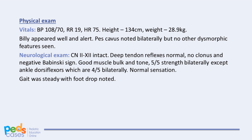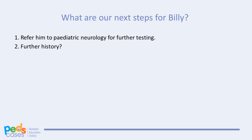On physical exam, Billy appears well with normal vital signs and growth parameters. Cranial nerves 2 to 12 are intact. His deep tendon reflexes are normal, and no clonus was elicited. He has good muscle bulk and tone. Strength is 5 out of 5 throughout, with the exception of his ankle dorsiflexors, which are graded 4 out of 5 bilaterally. Sensory exam is normal. Upon assessing his gait, bilateral foot drop is observed. Notably, Billy also has high arches, or pes cavus. Apart from referring him to a neurologist for further testing, what else can we do? What other history would be relevant to elicit?